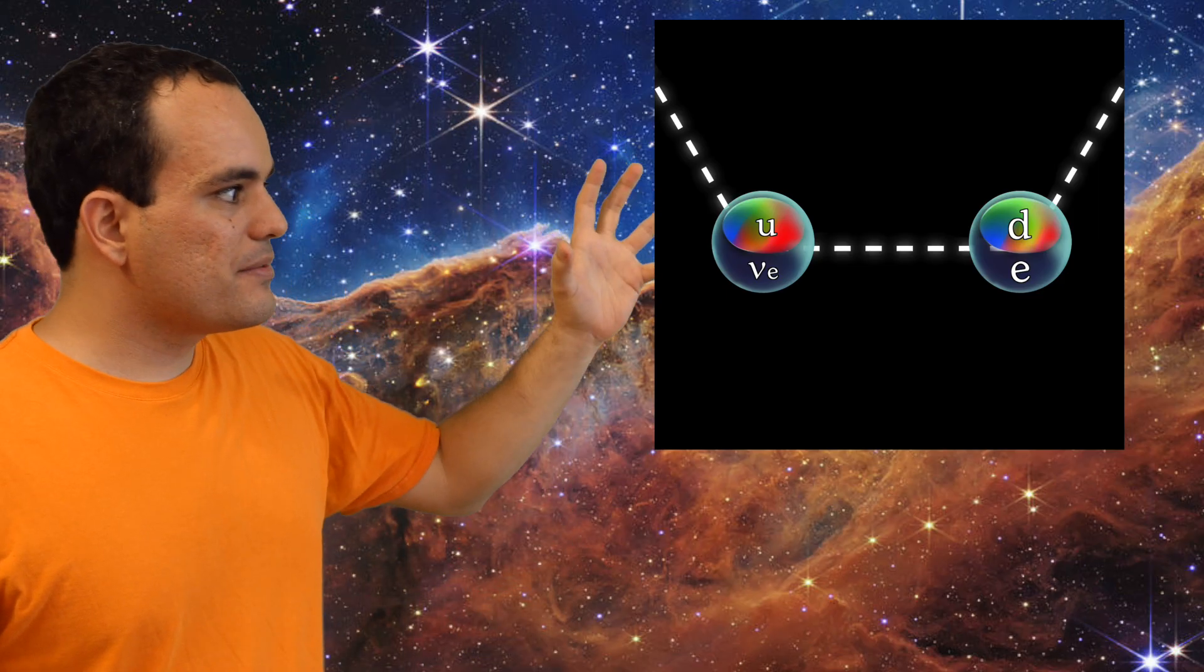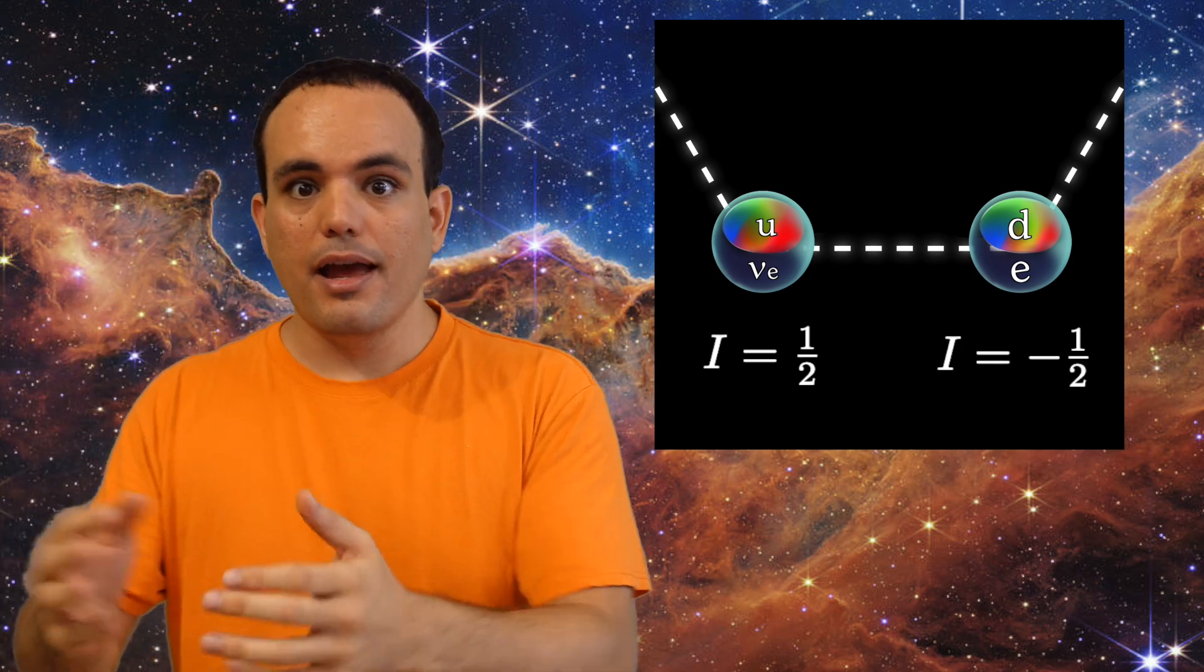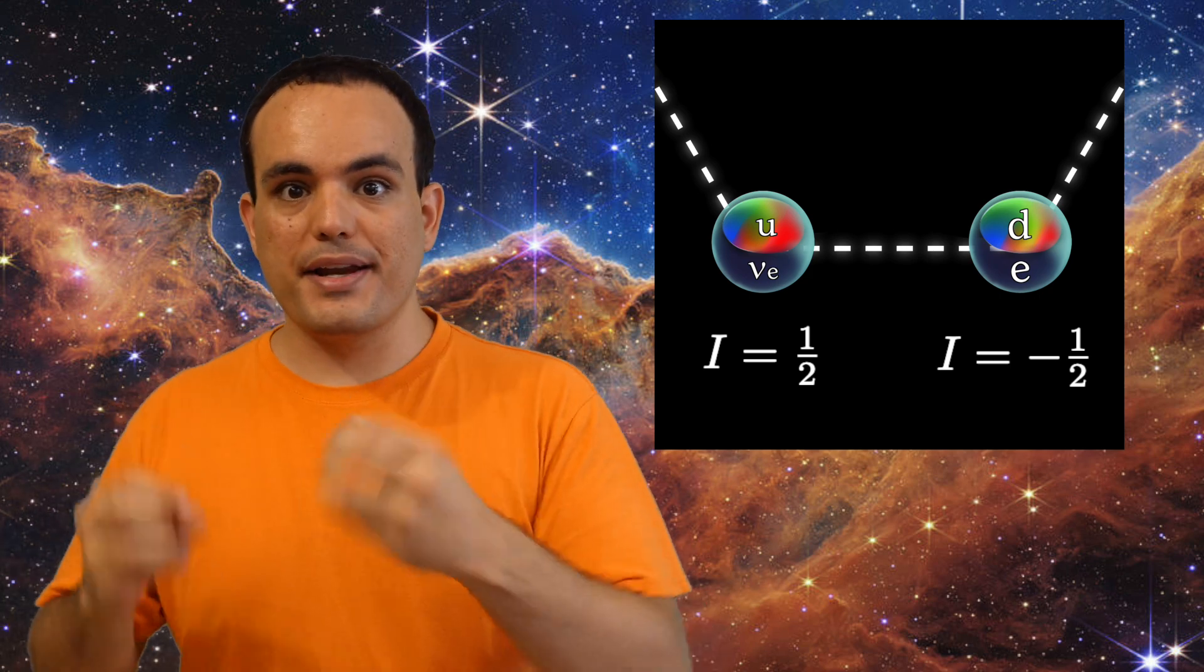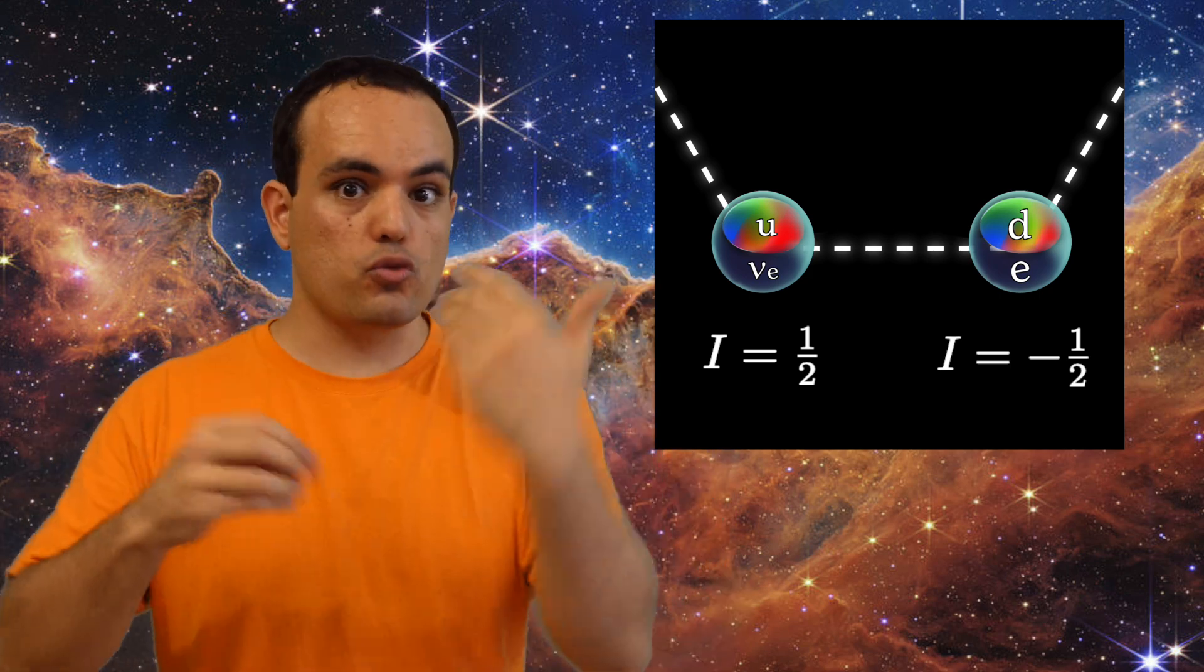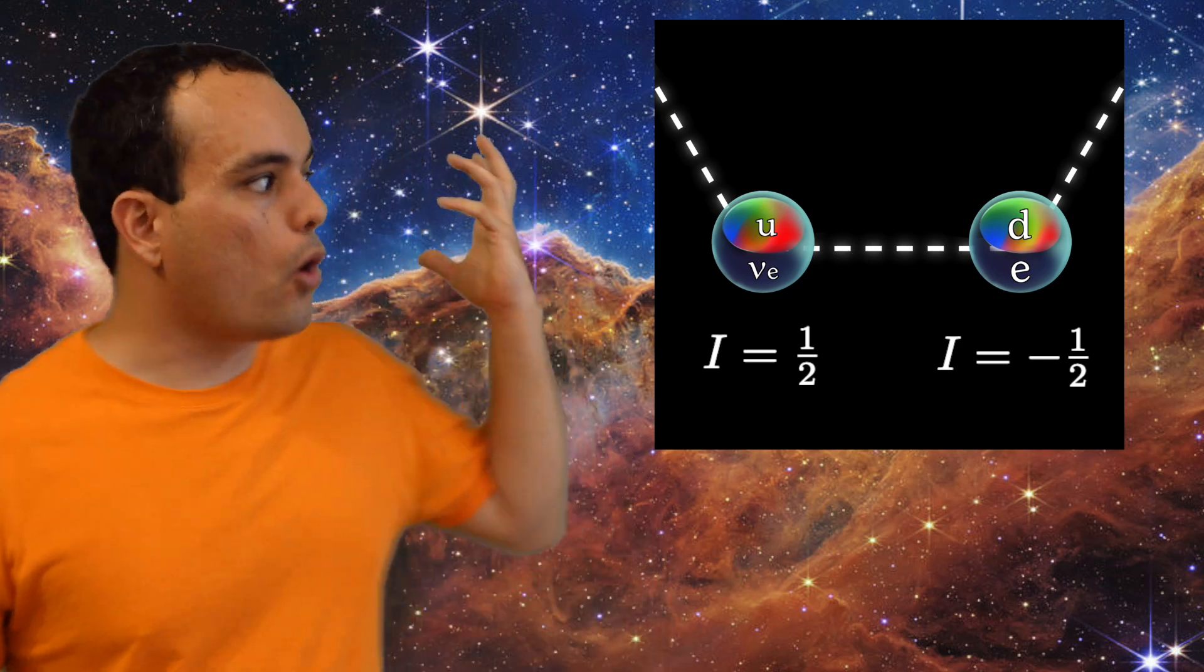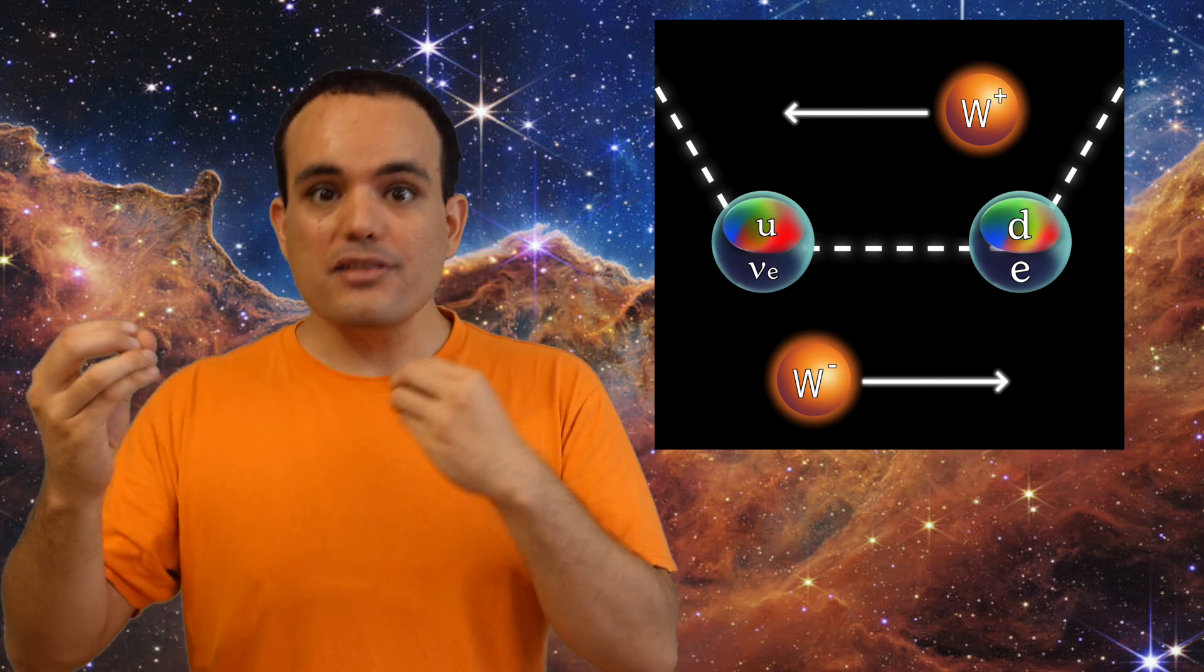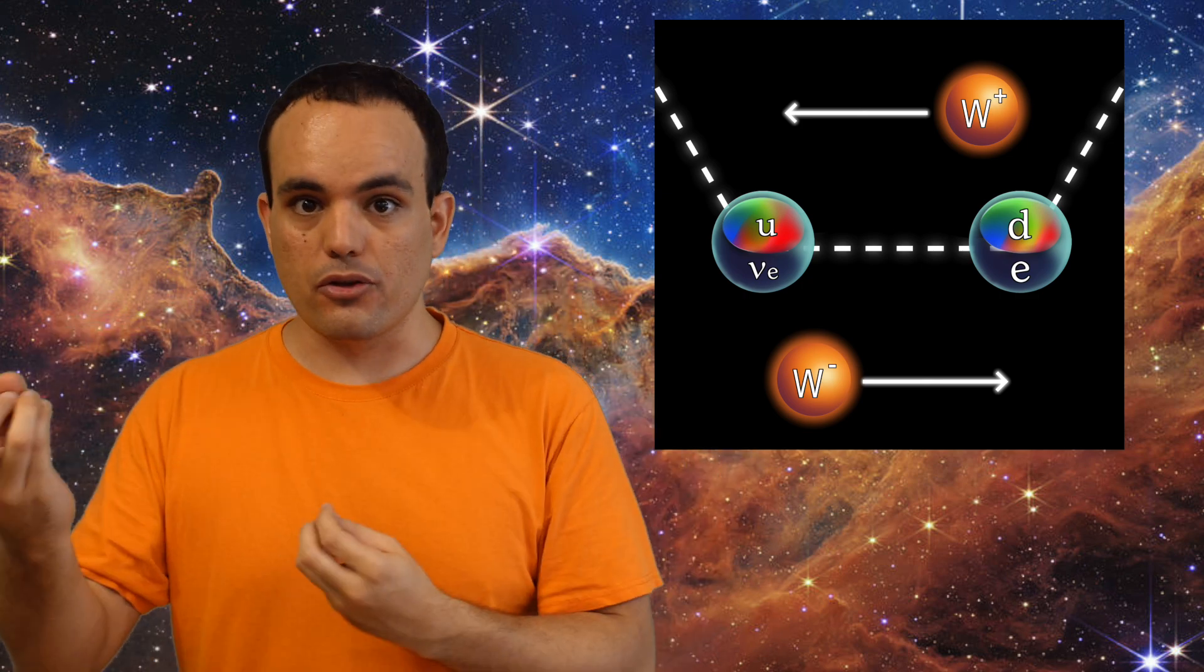When people first discovered isospin, they compared it to regular spin, and so they called isospin one-half up and isospin minus one-half down, and that's the reason these quarks are called up and down. If they have enough energy, quarks can also change their isospin by exchanging W-bosons.